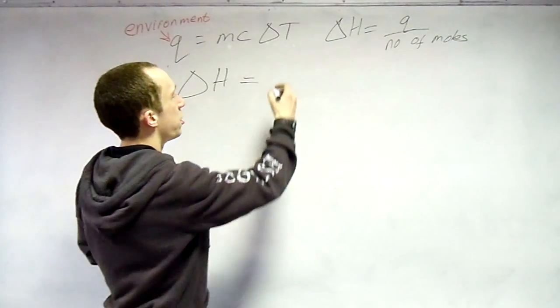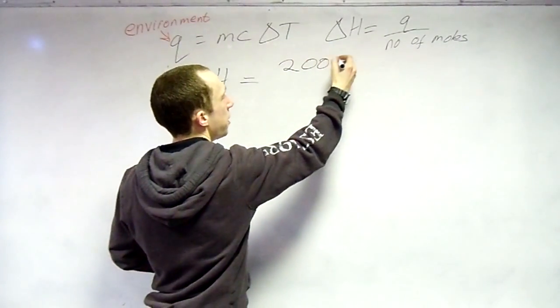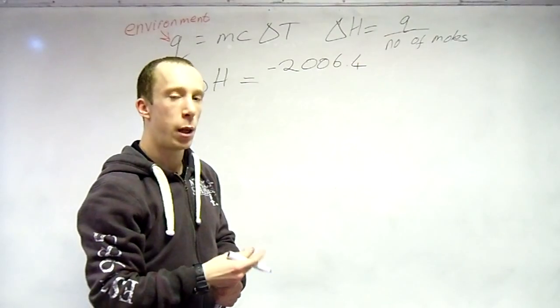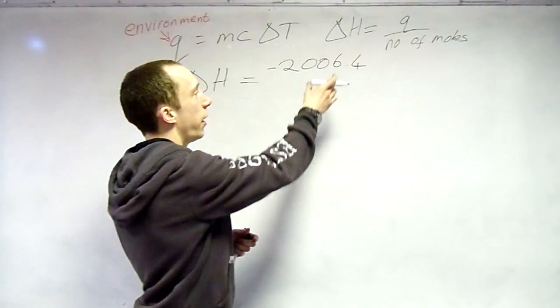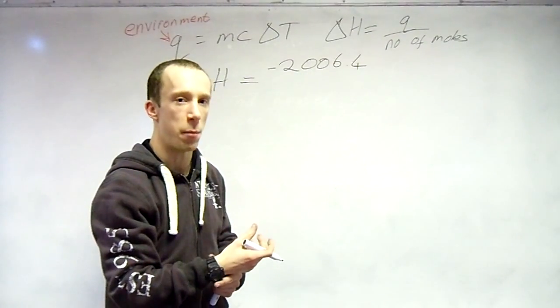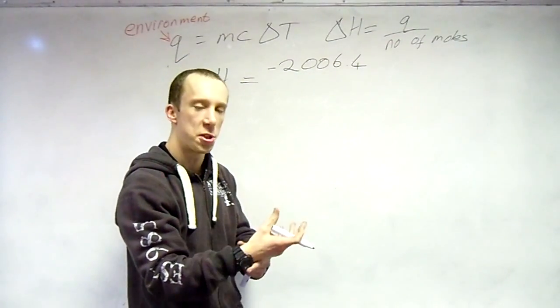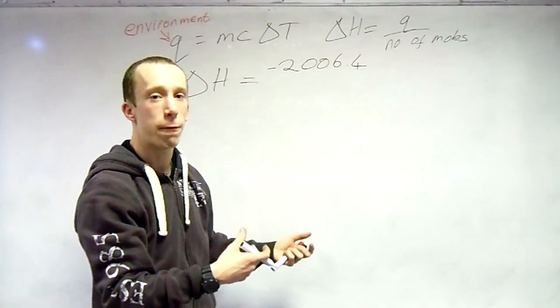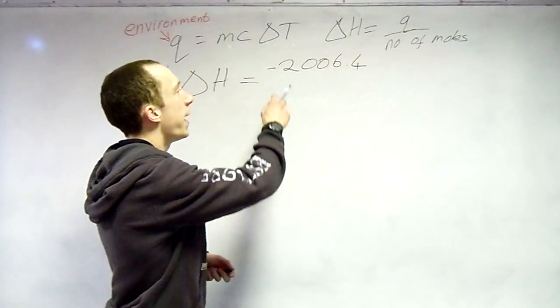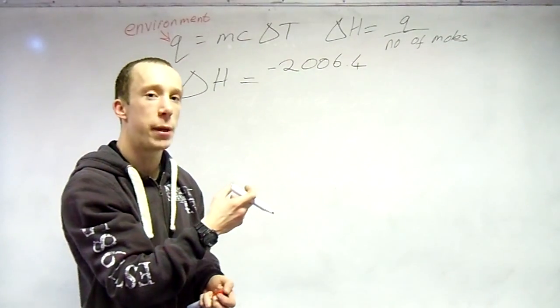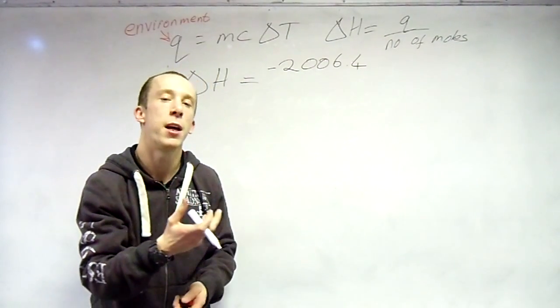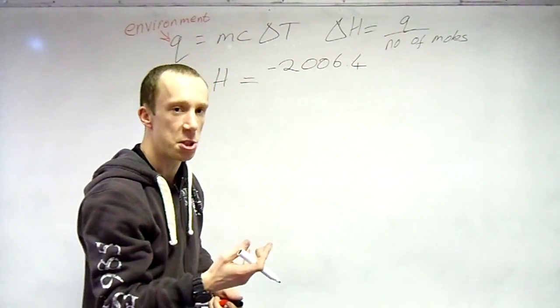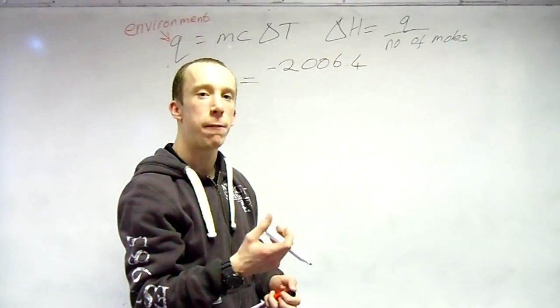So delta H, the Q value we had before, 2,006.4. Now you can choose to insert a negative symbol now, because as we said before, this is now looking at the energy in the system. The system lost energy. It doesn't matter whether you put it in now or if you just put it in at the end of the question. But remember, if it is an exothermic reaction, delta H should be what? Negative. If it is an endothermic reaction, delta H should, vice versa, be positive. You will lose marks if you forget that.